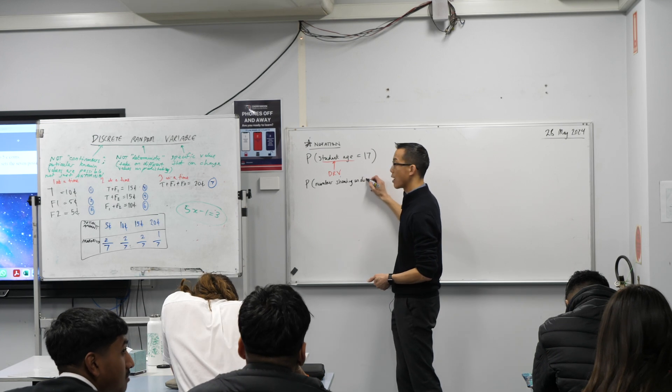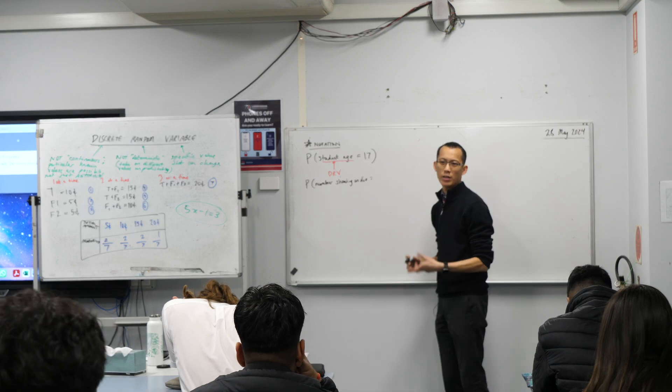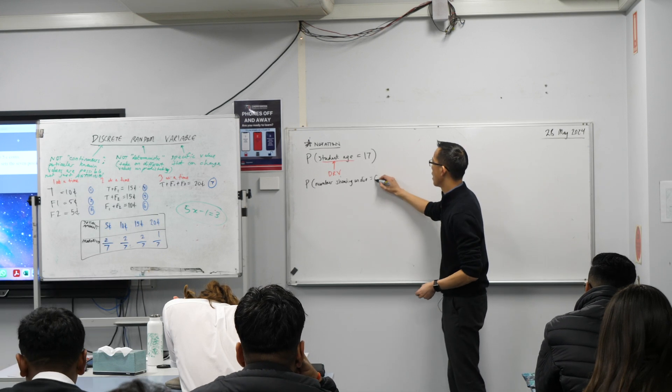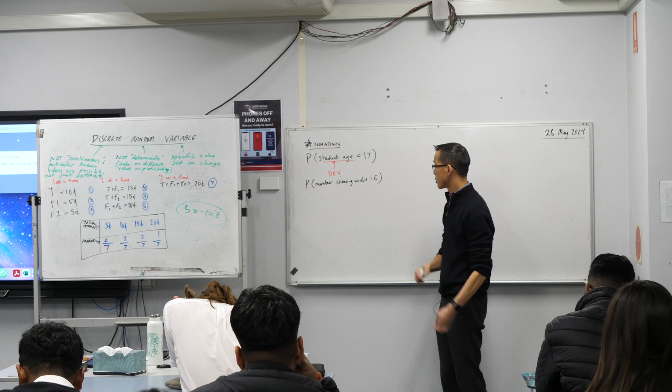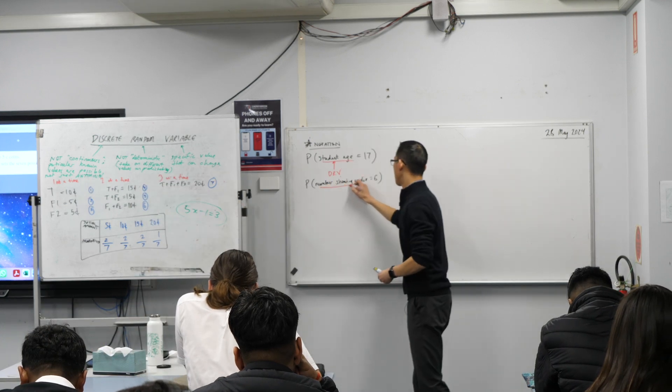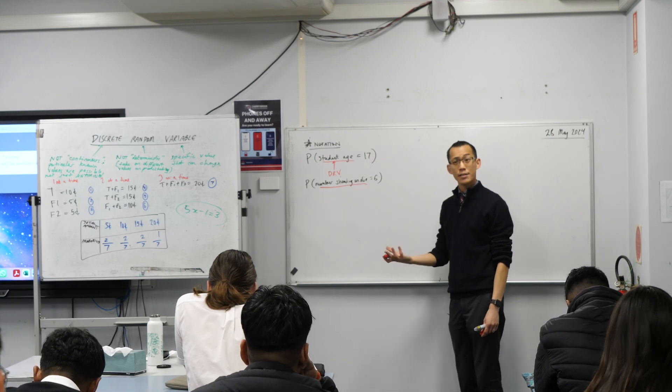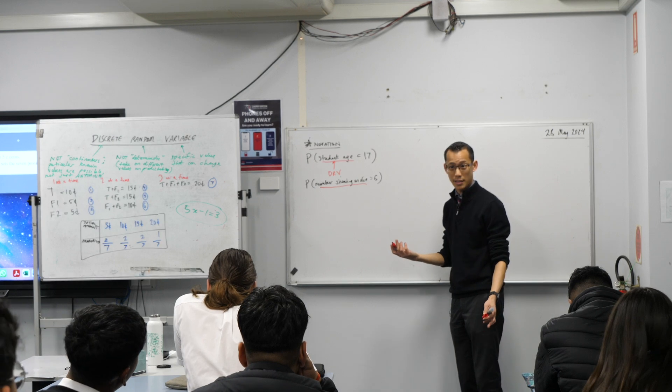I'm going to name the discrete random variable. Instead of just saying probability of six, I'm like, what's the variable, right? So, I would say number showing on die. You can see how I'm going out of my way to define what the discrete random variable is, which, in probability, we never used to worry about that, right? And I might say it's equal to six. So, again, let me highlight, you've got this part here, that's the discrete random variable, and then these things here are the particular value you're interested in. Does that make sense?